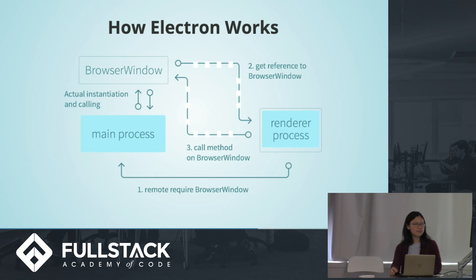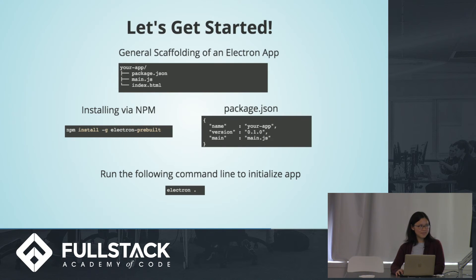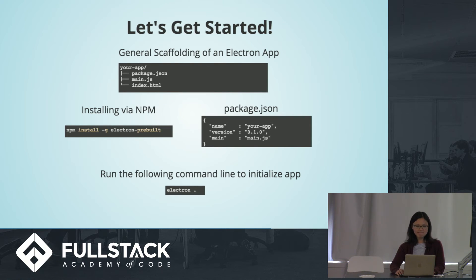Here's a quick diagram of how it works. You call in the browser window, require it just how you would Express. You instantiate the browser windows, call a reference to it, and with that you get all the methods associated with the browser window with your main process. So here's a general scaffolding: your app has a package.json, main.js, and an index.html. You install it via NPM, and then you run electron — and that's your app initialized.